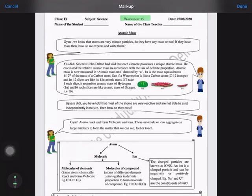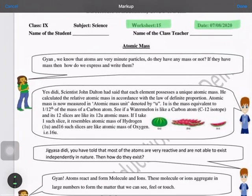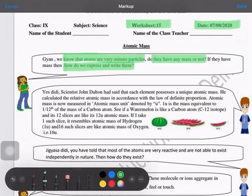This is Worksheet 15 for the date 07/08/2020, from your third chapter on Atoms and Molecules. In this worksheet, Gyan is asking: we know that atoms are very minute particles, so do they have mass or not? We've talked about the size but we haven't talked about the mass, and if they are having mass, how do we express and write them? It's a very good question.